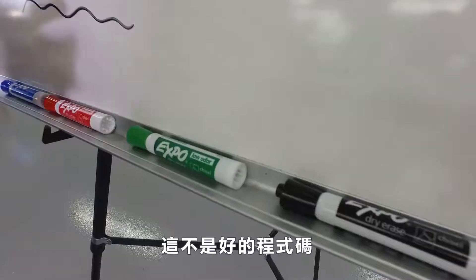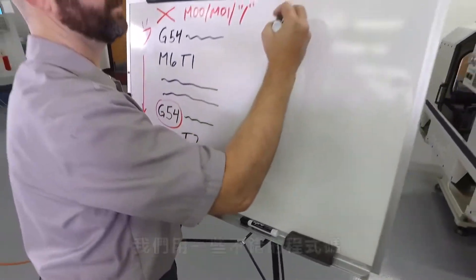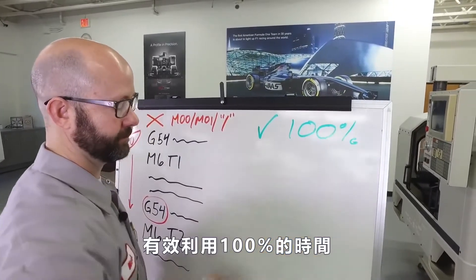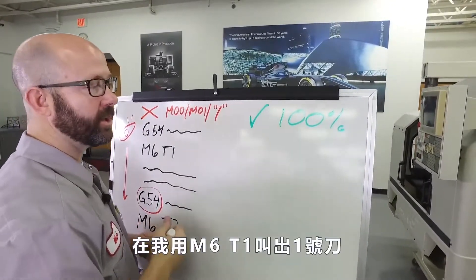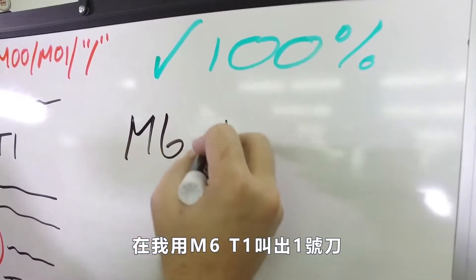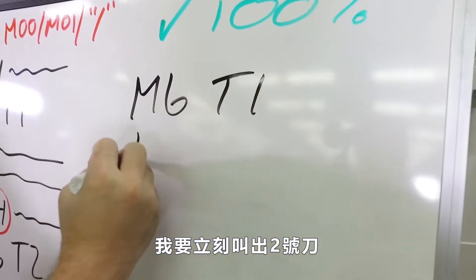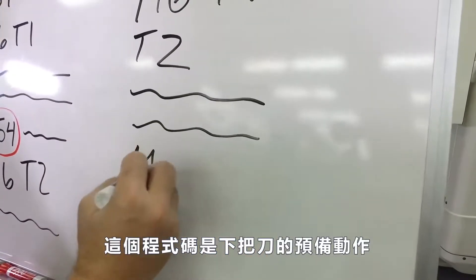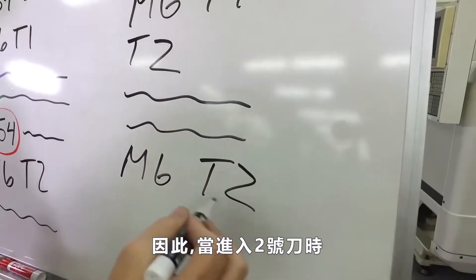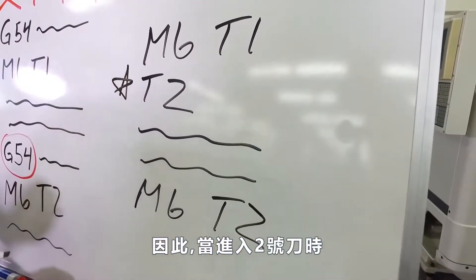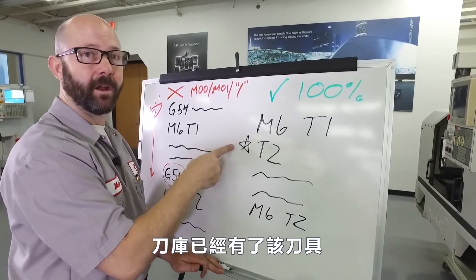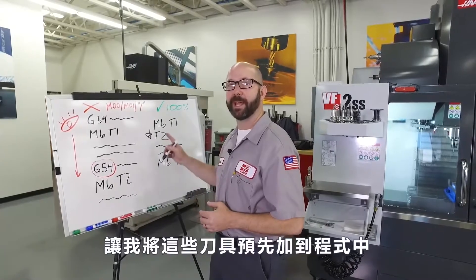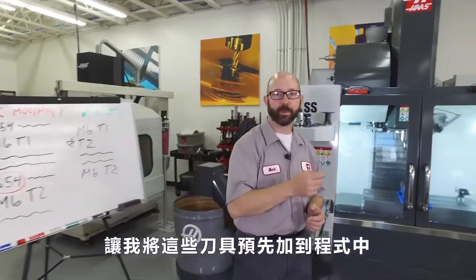This is bad code. Here's our solution — we're gonna use some good code that's gonna work 100% of the time. After we've called up our tool one with an M6, T1, we're gonna immediately call a T2. This is gonna pre-stage the next tool that's coming up in my program, so by the time we get to tool two in my program, the carousel already has that tool ready for the fast changeover. Let me add those tool pre-calls to my program and we'll see how it runs.